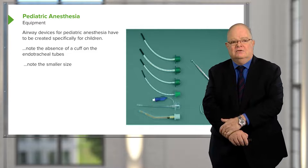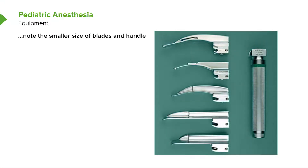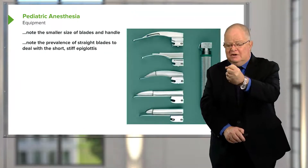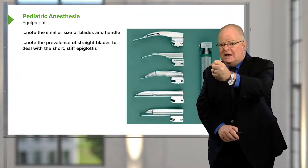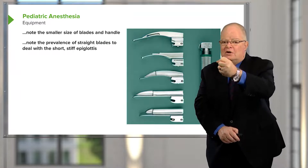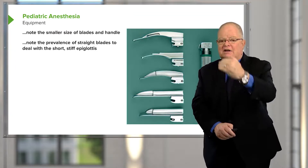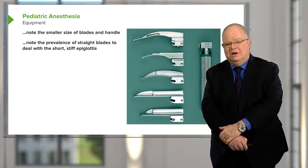These are typical pediatric laryngoscopes. Even the largest, used for children up to about eight or nine years of age, is not as curved as the adult Macintosh blade. Many of the blades used in children are straight blades — the Miller blade is much more commonly used in children than adults. Because the epiglottis is so stiff, you actually place the blade under the epiglottis and lift it directly, whereas in adults you place it in front of the epiglottis and lift the tongue — which in turn lifts the epiglottis. That indirect technique doesn't work predictably in small children.